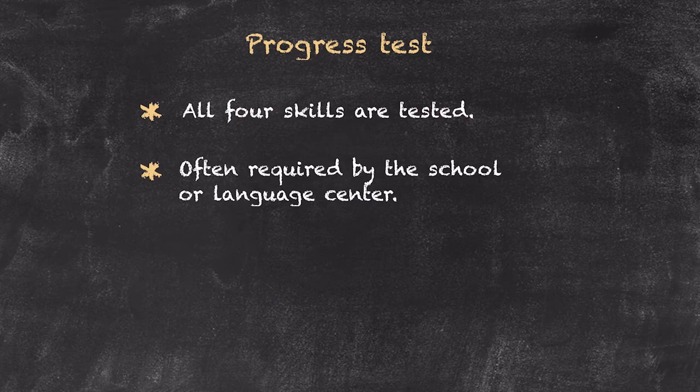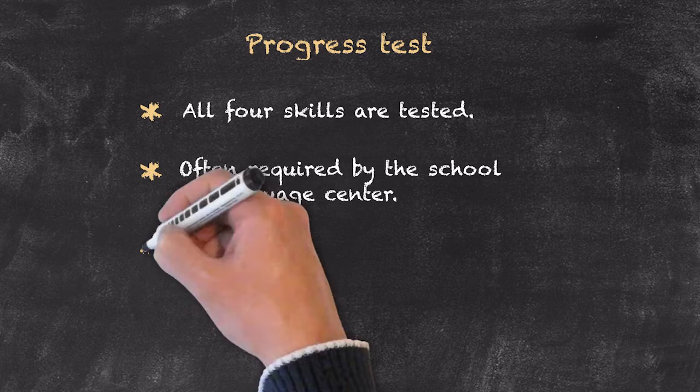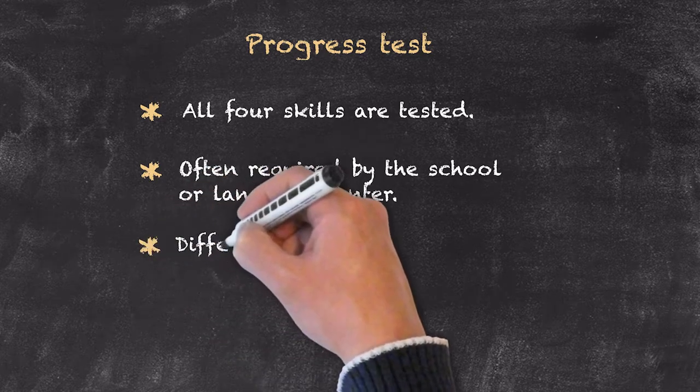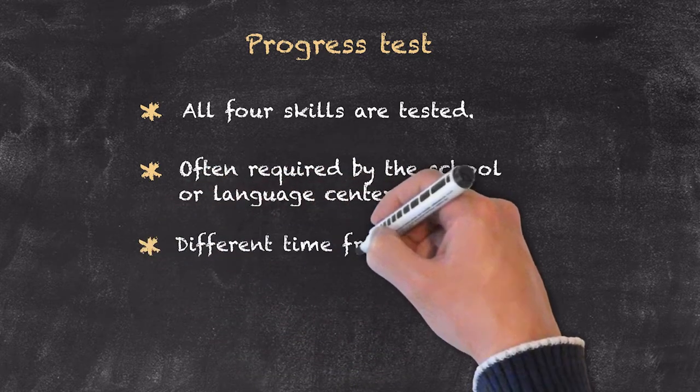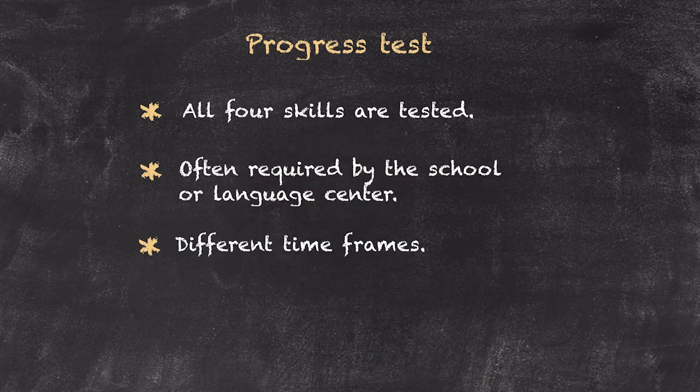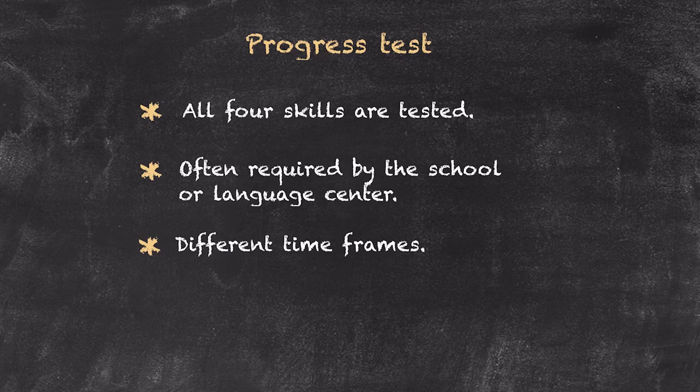The duration of time that the progress test is taken over can vary. It could be a particular unit test that's done when a unit is completed in a book. It could be a term test, it could be half year, or it could be an end of year. So there are different lengths of time over which these progress tests are covering.